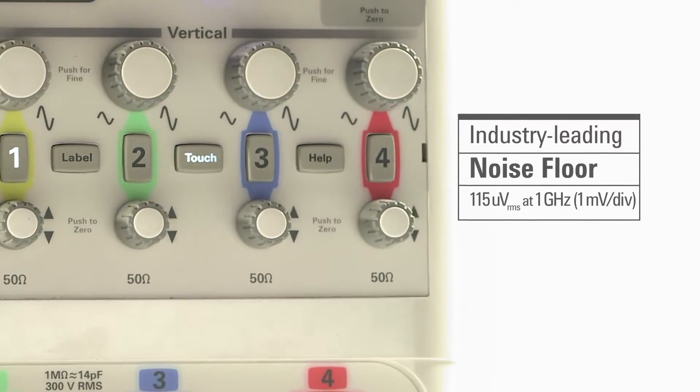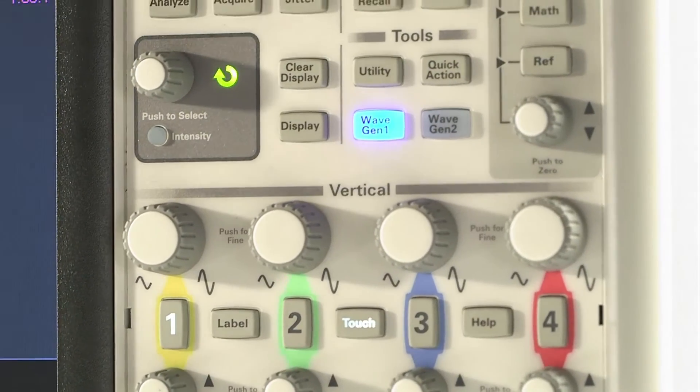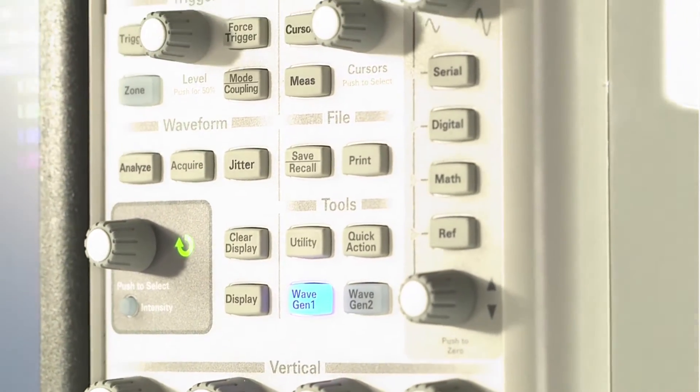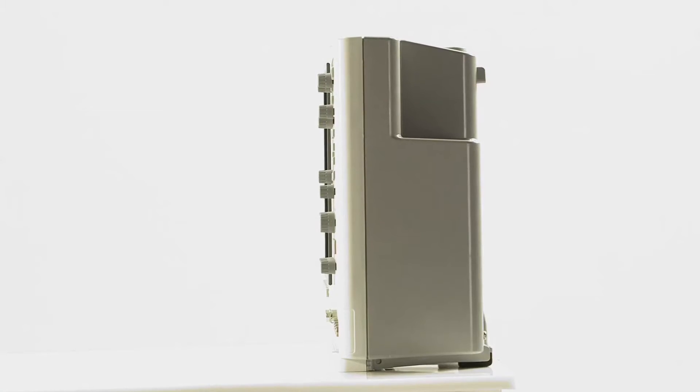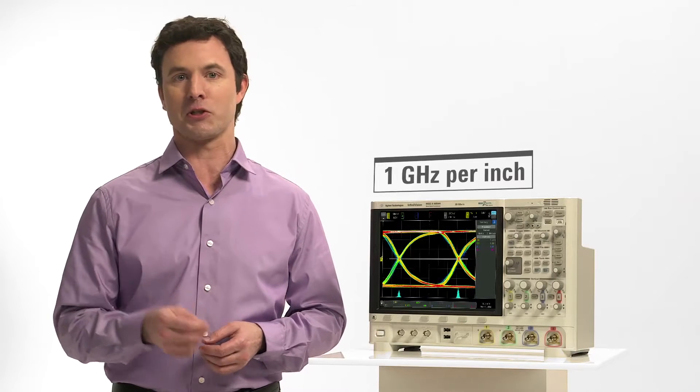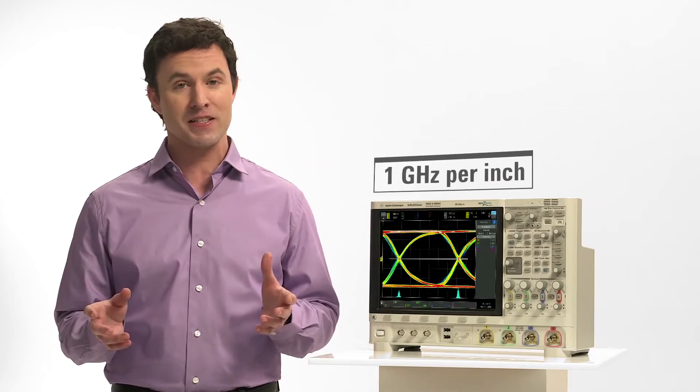And it all comes in a superior form factor. At 15 pounds, it's 70% lighter than other 6 GHz scopes on the market, and it's only 6 inches deep. In terms of bandwidth, that's 1 GHz per inch. No other oscilloscope in this class comes close.